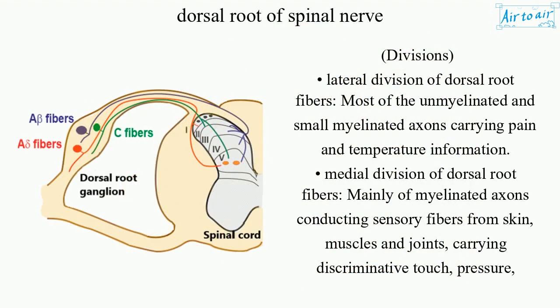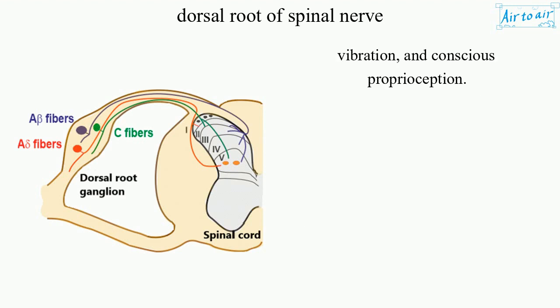Divisions: the lateral division of dorsal root fibers consists of most of the unmyelinated and small myelinated axons carrying pain and temperature information. The medial division of dorsal root fibers consists mainly of myelinated axons conducting sensory fibers from skin, muscles and joints, carrying discriminative touch, pressure, vibration, and conscious proprioception.